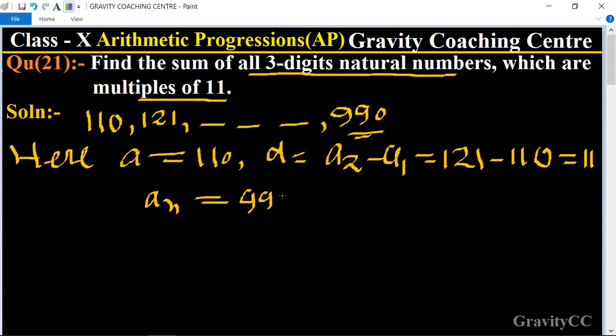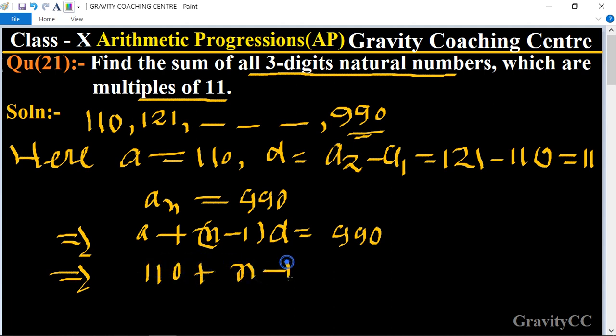So now we use the formula of nth term: a plus n minus 1 times d equals 990. And the value of a is given as 110 plus n minus 1, and the value of d is 11, equals 990.